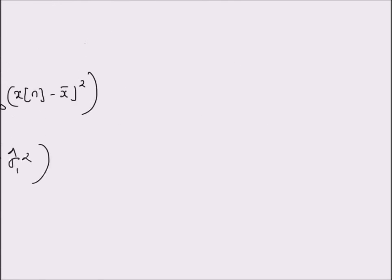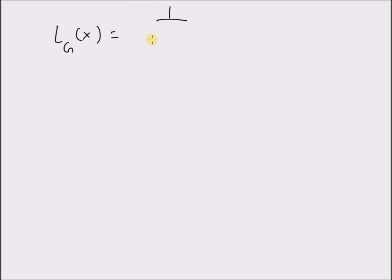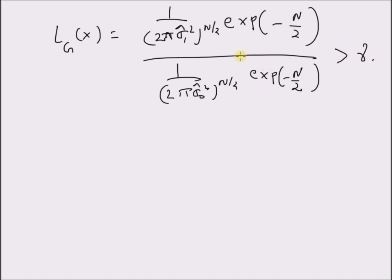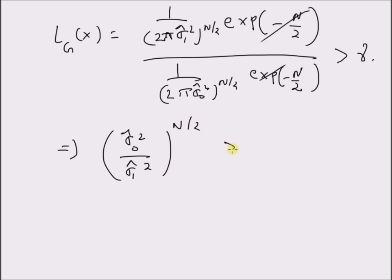Now using these two results, we write the likelihood ratio LG(x) as: [(1/(2π σ₁²-hat))^(N/2) × exp(−N/2)] divided by [(1/(2π σ₀²-hat))^(N/2) × exp(−N/2)], which should be greater than gamma. Clearly, the exponentials cancel, and we are left with (σ₀²-hat / σ₁²-hat)^(N/2) > gamma.